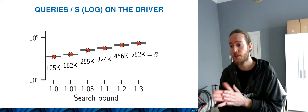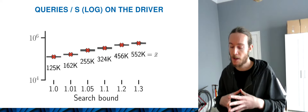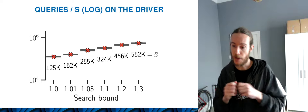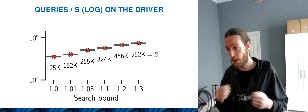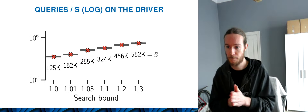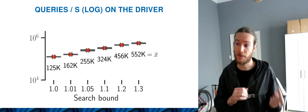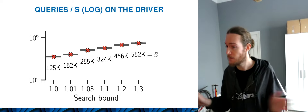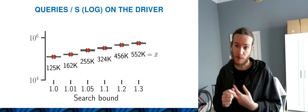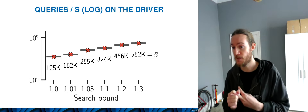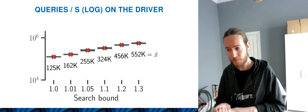The main metric we're interested in is throughput — the number of queries we can process per second. Here I'm showing results for bounded suboptimal search. On the x-axis is the search bound: at 1.0 we're running optimal search, and at 1.3 we have a 30% suboptimality guarantee. If we're doing optimal search, we run about 125,000 queries per second — it takes about five seconds to process our entire query set, which is fairly reasonable. If we run a 30% suboptimality gap, we can route over half a million queries per second — less than one and a half seconds to route the entirety of Melbourne's demand for the entire day.